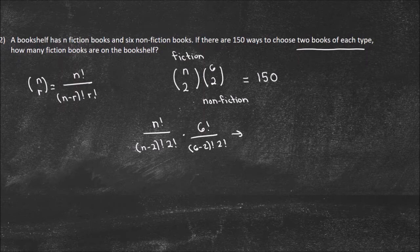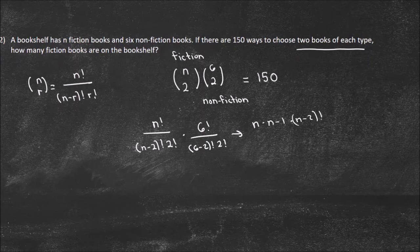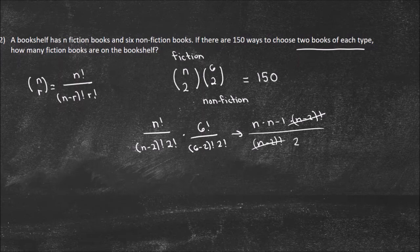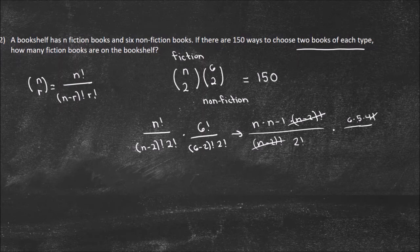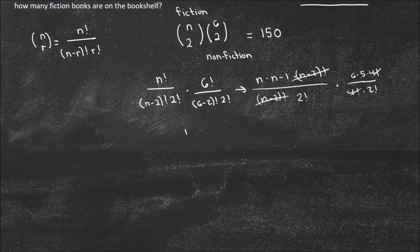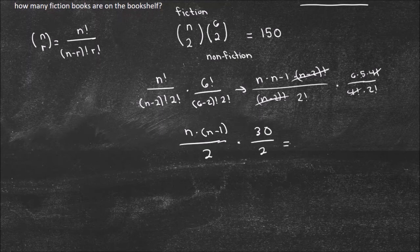I'm going to simplify. n factorial divided by (n minus 2) factorial — well, n factorial is n times (n minus 1) times (n minus 2) factorial, so the (n minus 2) factorials cancel. I'm left with n times (n minus 1) over 2 factorial. For the nonfiction part: 6 factorial divided by 4 factorial — I can expand 6 factorial as 6 × 5 × 4 factorial, so the 4 factorial cancels. That gives n times (n minus 1) over 2, multiplied by 6 × 5 over 2, equals 150.